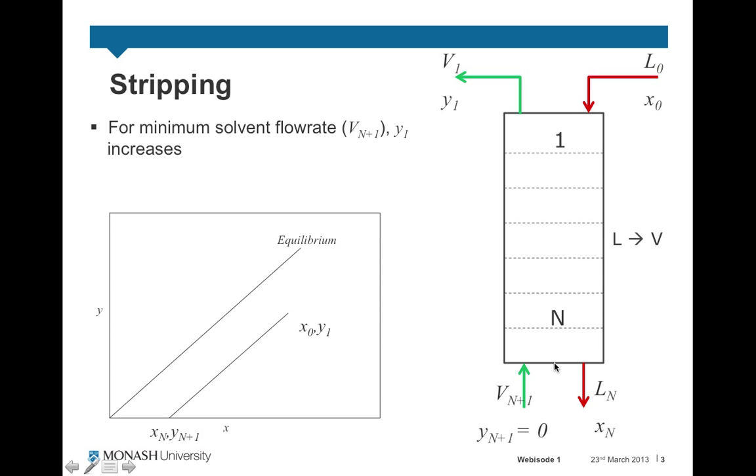As we decrease this solvent flow rate here, we increase the concentration Y_1 in the vapour phase leaving the top of the column. And so what that results in is this end of the operating line shifting upwards, like so.